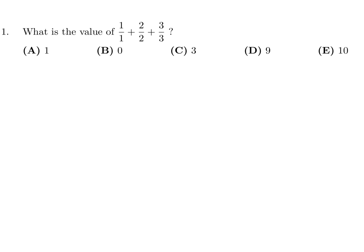What is the value of 1 over 1 plus 2 over 2 plus 3 over 3? 1 over 1 is 1, 2 over 2 is 1, and 3 over 3 is 1. So you have 1 plus 1 plus 1, which is 3. Answer is C.